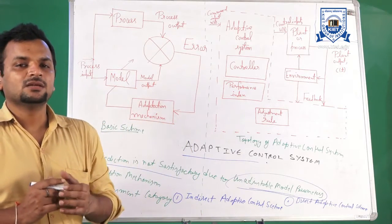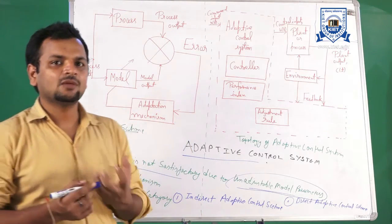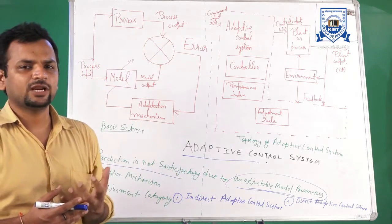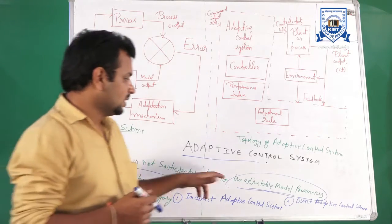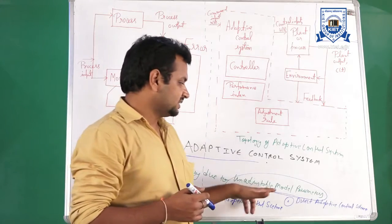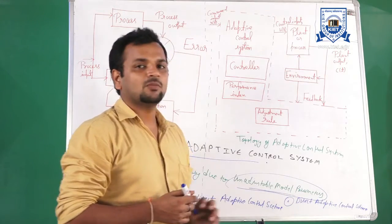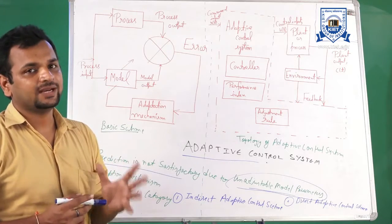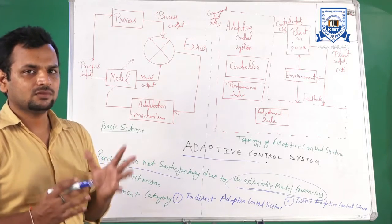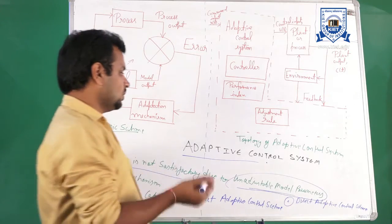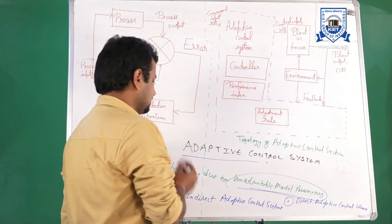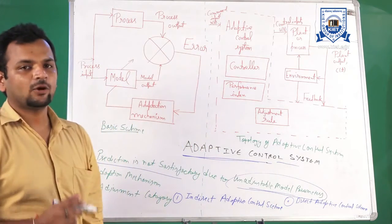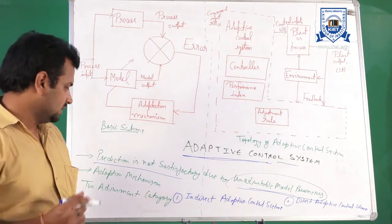In predictive control, you can predict the process dynamics with the help of previous inputs and outputs, but there is no adaptation scheme. Due to unadjustable model parameters, there is an error in predictive control. To overcome that error, a new control system is introduced, known as the adaptive control system or adaptive control scheme.